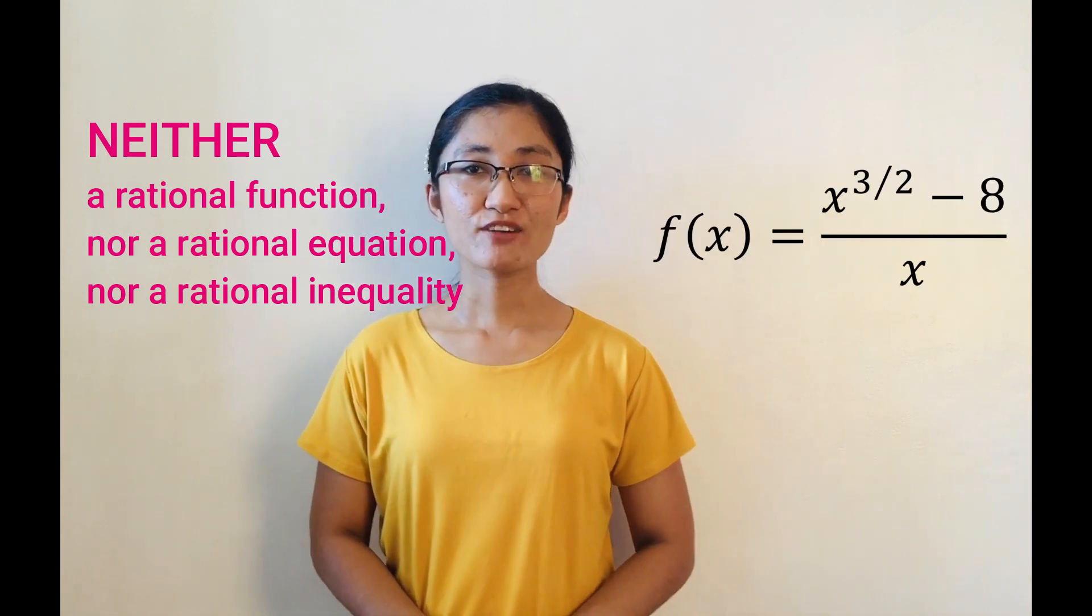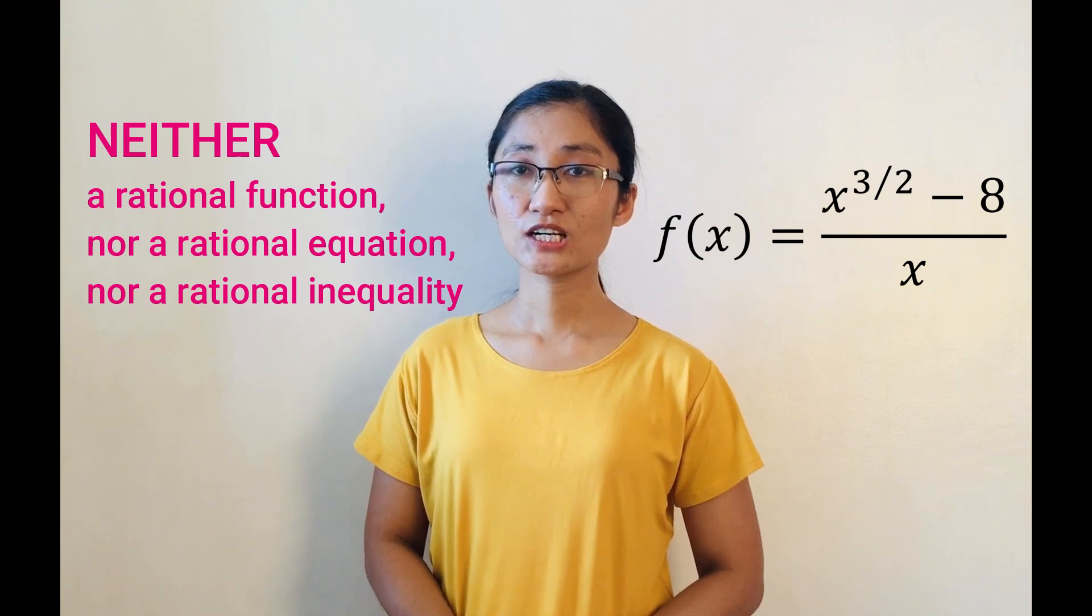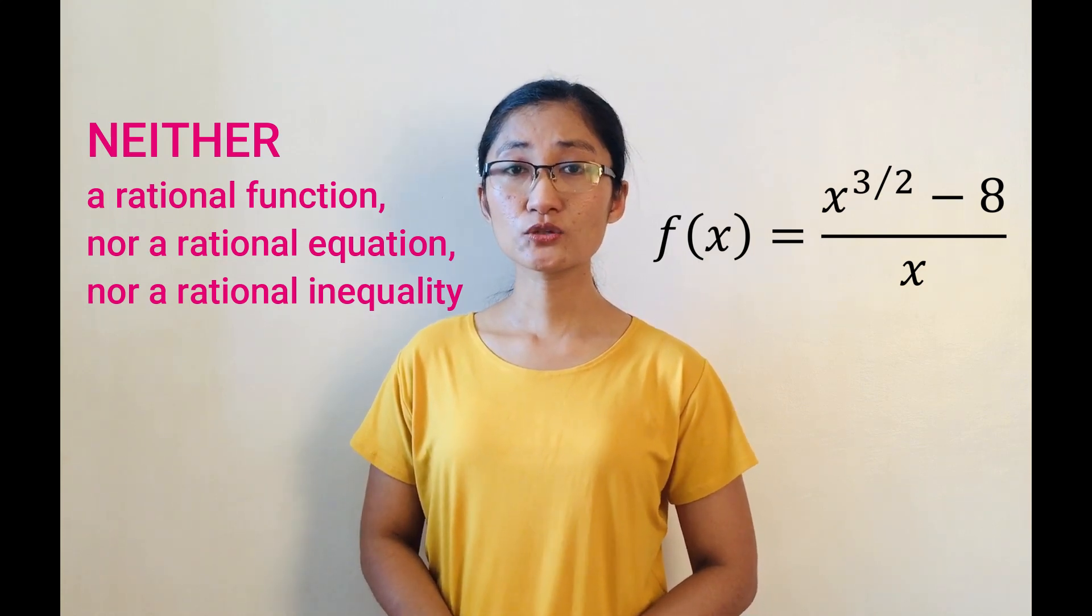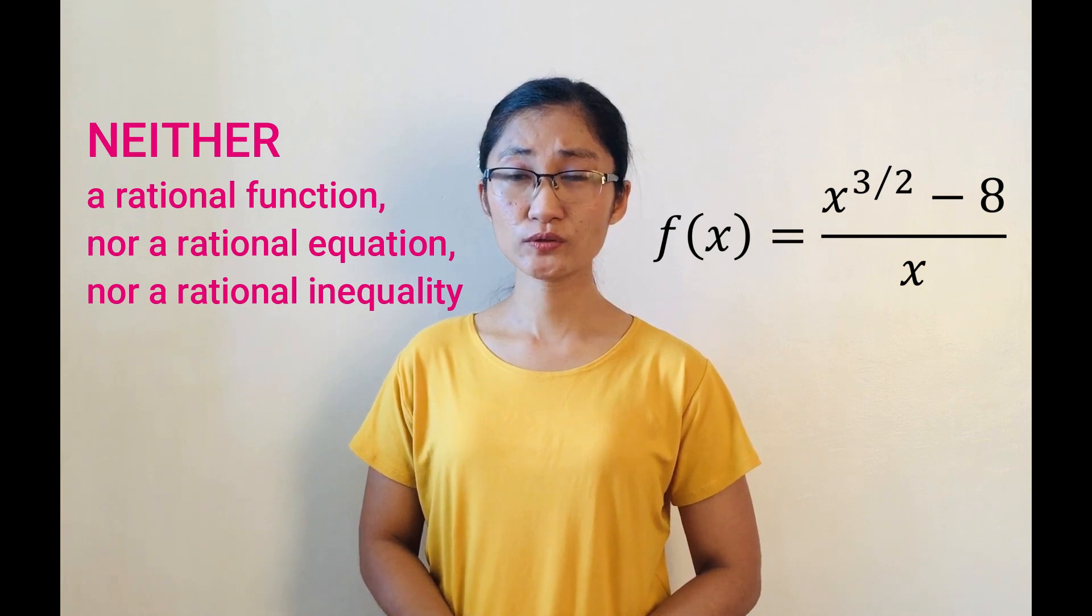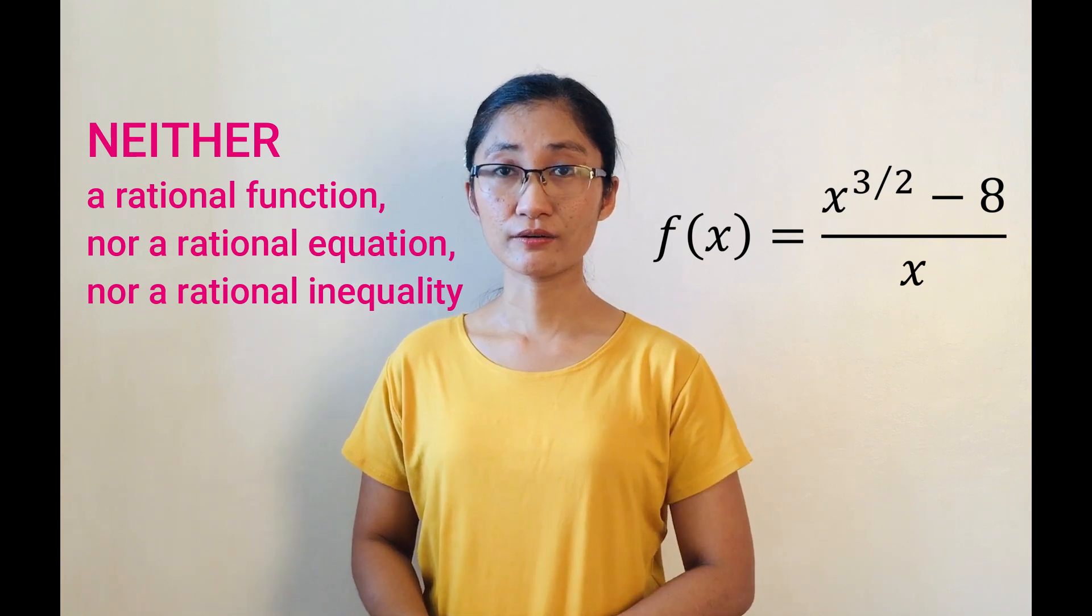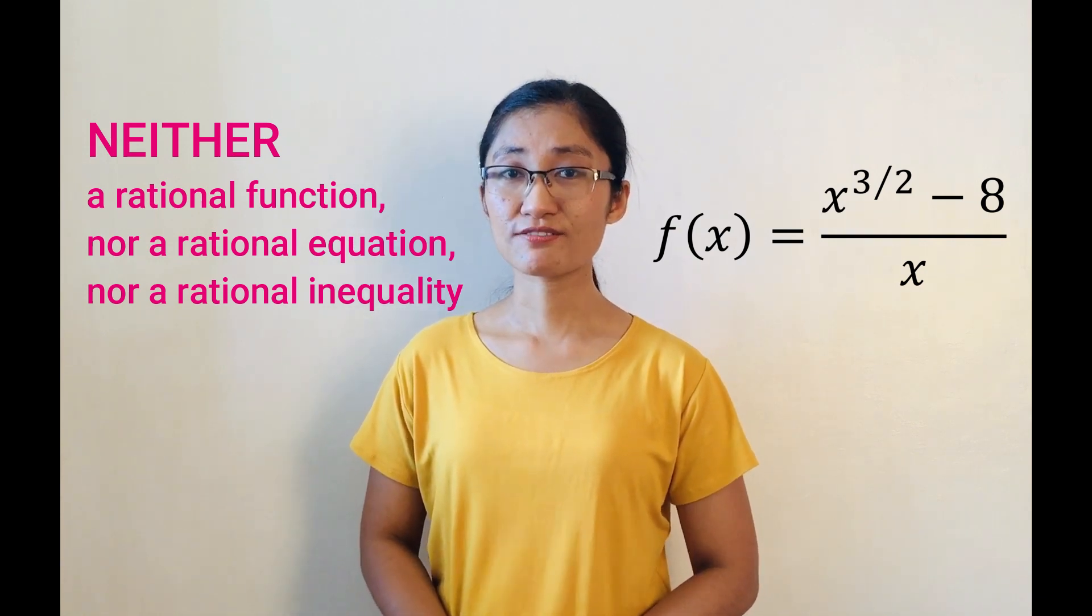Another example is f(x) = (x^(3/2) - 8)/x. It is a function, but then the numerator involves a non-integral exponent, and that's the exponent of x. Therefore, it's not a rational function.